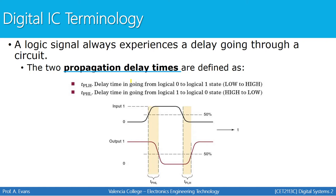Another term we're going to discuss is propagation delay, which you've probably seen in Digital 1. We have two propagation delay times: the delay going from a low to a high, and the delay going from a high to a low. Propagation delays are especially important with switching characteristics like flip-flops, and might be used to determine, for example, the delay in a counter using flip-flops.